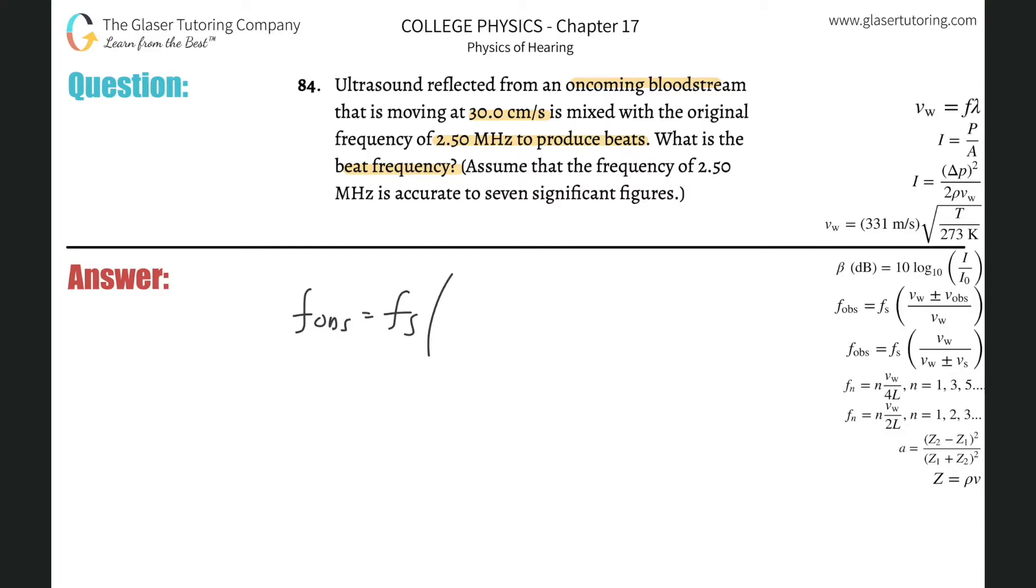So the frequency observed is going to be equal to the frequency of the source times the velocity of the sound through the medium it's traveling through, plus or minus the velocity of the moving object—in this case it's blood—divided by the velocity of that sound in the medium in which it's traveling through, plus or minus the velocity of the blood.